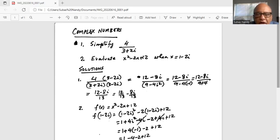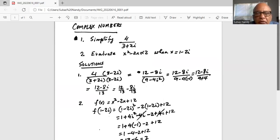Now we have to value of the function when x is equal to 1 minus 2i. So for x, we are going to substitute 1 minus 2i in the function and we get 1 minus 2i squared minus 2 times 1 minus 2i plus 12.